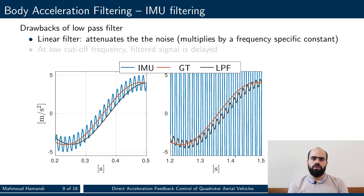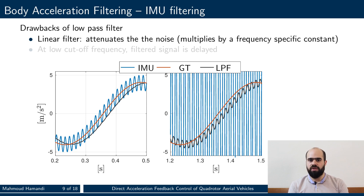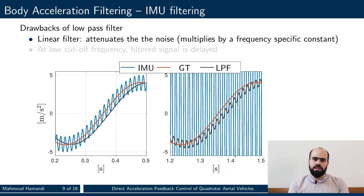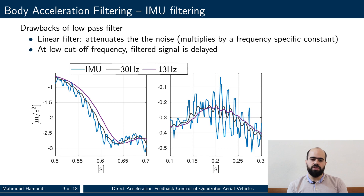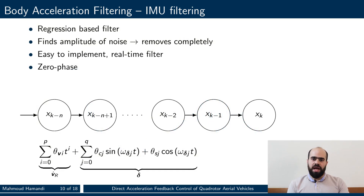However, a low-pass filter has a few drawbacks. First of all, a low-pass filter is a linear filter where it multiplies the signal at each frequency by a frequency-specific value. As such, if the noise has a large amplitude as shown here, it can still be present in the filtered output. Of course, this can be overcome by reducing the cutoff frequency. However, the low-pass filter also delays the signal, and this delay becomes more significant when we lower the cutoff frequency.